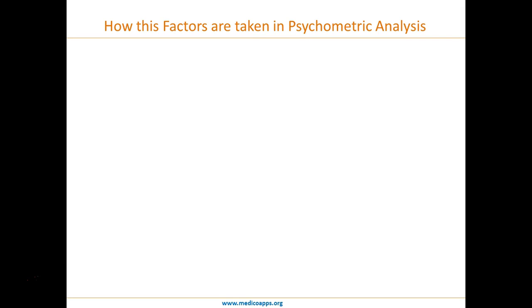Let me go forward and bring out some observations. First of all, how is difficulty grading done in questions? For any question, the computer is told the attempt percentage — how many questions were attempted versus how many were accurately answered. Based on these two parameters, the difficulty grading is done. The system also saves the average amount of time taken by users to solve a question.